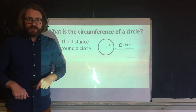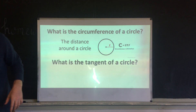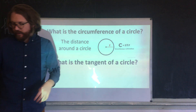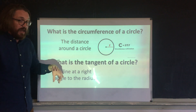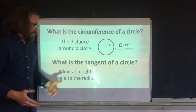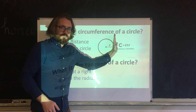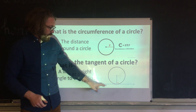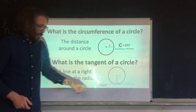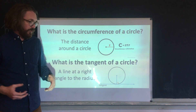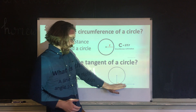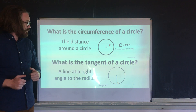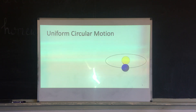Something you may not have heard of is the tangent of a circle. The tangent is a line that is at a right angle to the radius. To find it, draw the radius, then draw a line at a right angle — that's your tangent line. Tangent lines are special because they only touch the circle once.